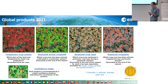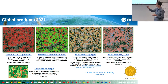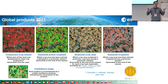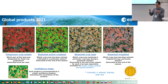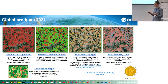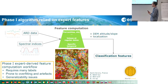That data has been used to produce the first global crop type maps. On the upper left we have the temporary crop extent, or the cropland mask. Within that cropland mask we have seasonal maps of active cropland, seasonal crop types, and seasonal irrigation. For most products there are also confidence layers that allow you to assess the expected quality of the product. These are available on platforms including Google Earth Engine.